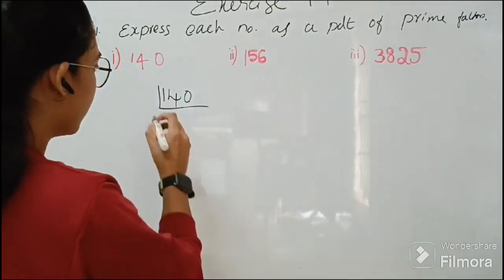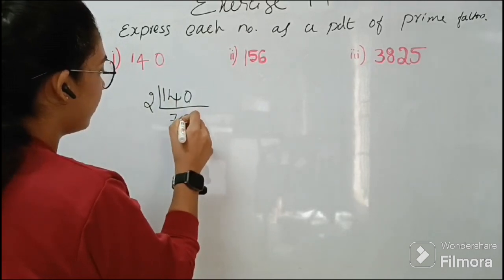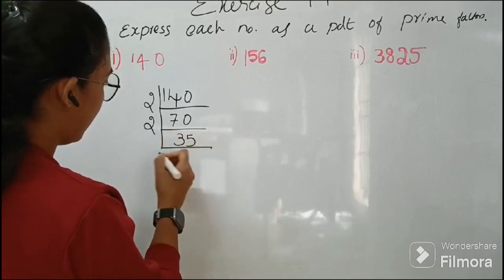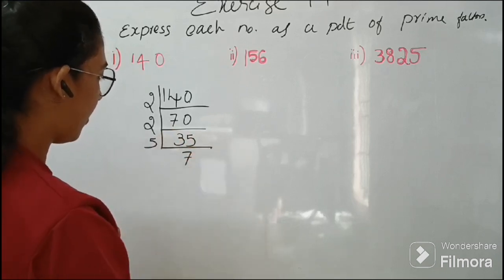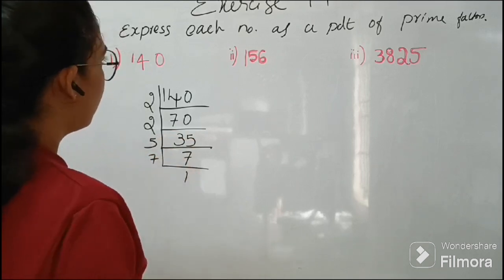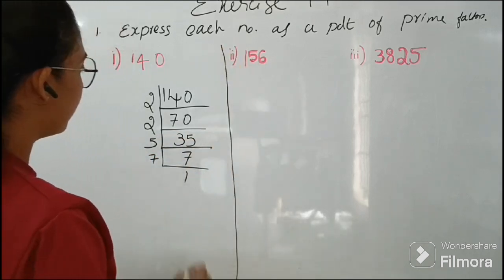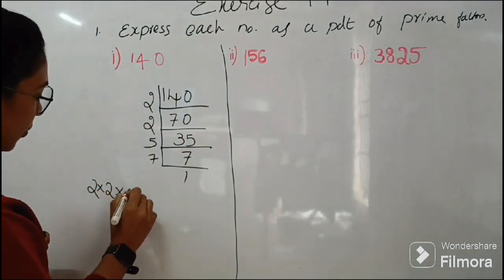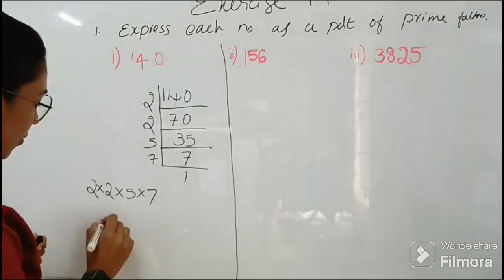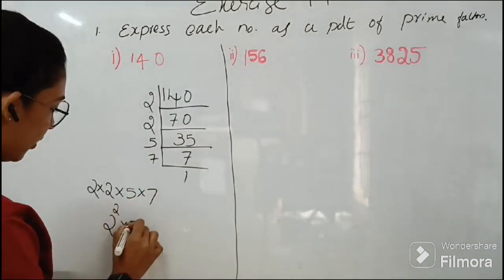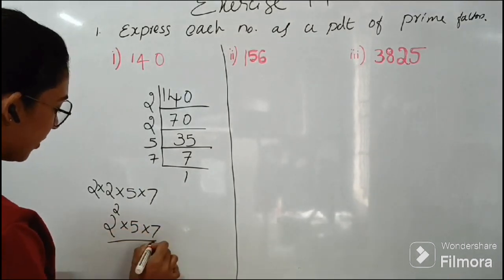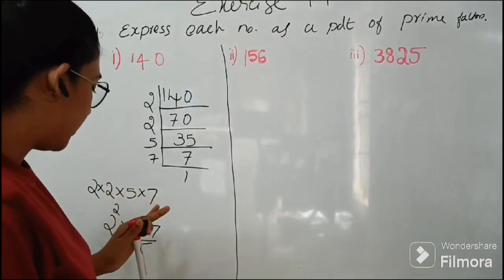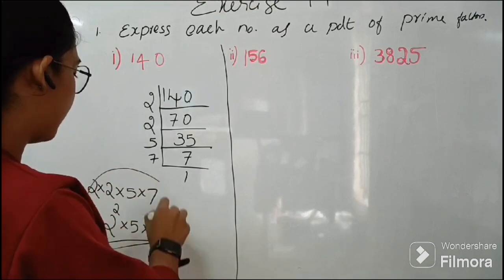Let's start it with 2. So 2, 140, 70, again 2, it becomes 35, and again 5, 7. So how can you write these factors: that is 2 into 2 into 5 into 7, or 2 square into 5 into 7. So 140 can be written as 2 square into 5 into 7. So this is the answer.